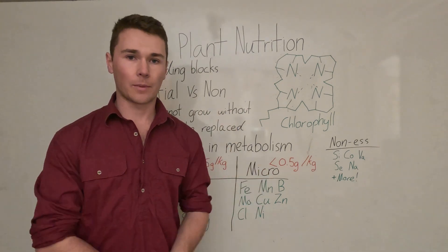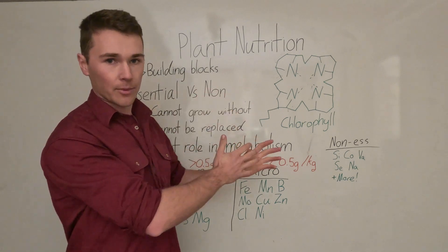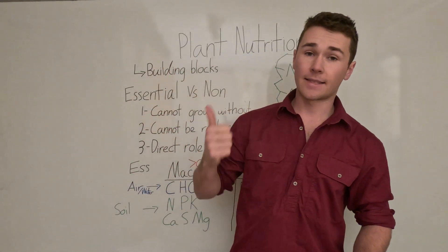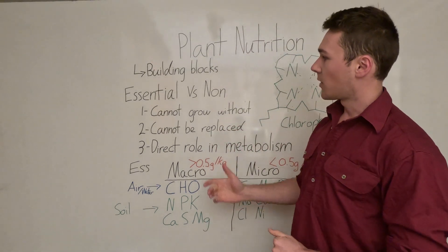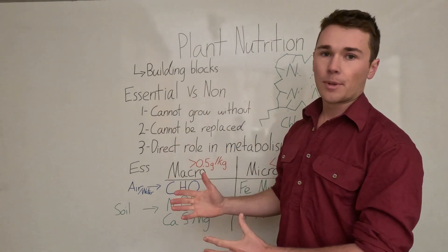A nutrient in general is just a nutrient that the plant uses as a building block. There's two types of these nutrients: there's essential nutrients or plant nutrients, and there's non-essential plant nutrients.